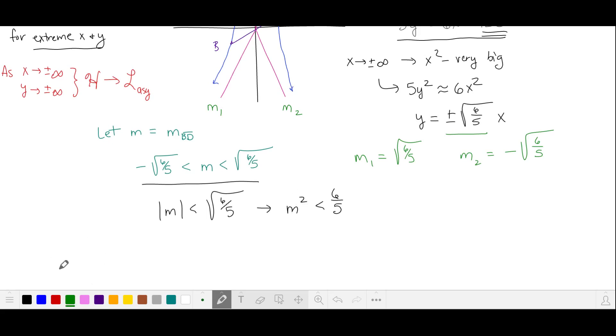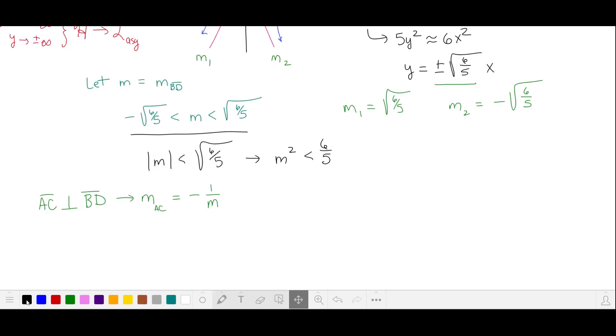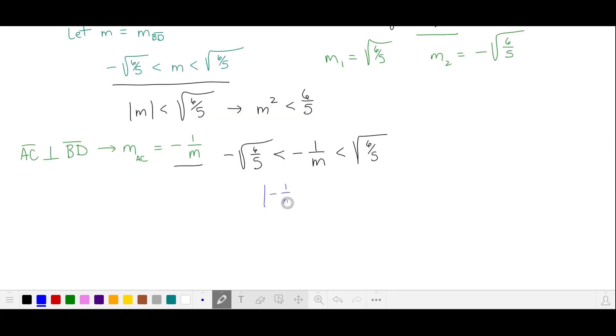Our rhombus has a second diagonal AC. And since the diagonals of our rhombus are perpendicular, it's going to be perpendicular to diagonal BD. This means that the slope of this diagonal is going to be the negative reciprocal of the slope of BD. And again, this diagonal is going to cross our two asymptotes to join the two parts of the hyperbola. So we have this other slope is between the slopes of our two asymptotes. We'll rewrite this as an absolute value and square both sides, and solve for m². So now we have an upper and lower bound on m².